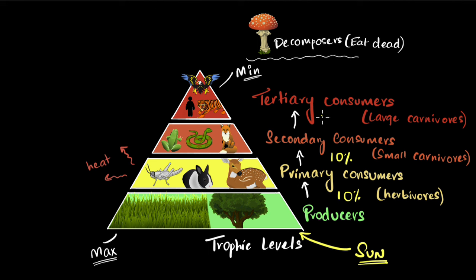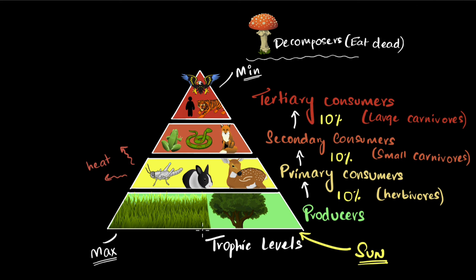Similarly, when tertiary consumers eat secondary consumers, only 10 percent of that energy is transferred. You can see the amount of energy keeps reducing as we go up the trophic level. After a point there just isn't enough energy to sustain life, and that's why we only have about four to five levels maximum. This also explains why there are fewer individuals higher up — with the least energy available, it's very hard to survive as an apex predator.